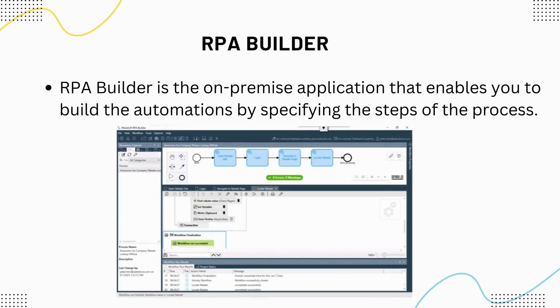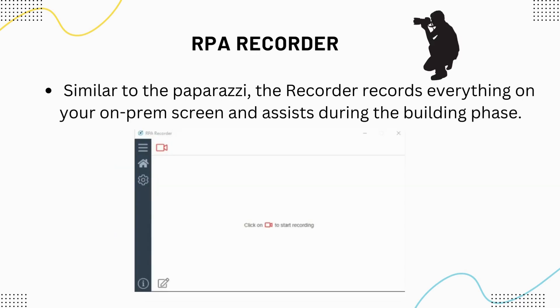The next component is RPA Builder. RPA Builder is the on-premises application that enables you to build the automation by specifying the steps of the process. As you can see in the image, we have created a BPMN diagram to build an automation.